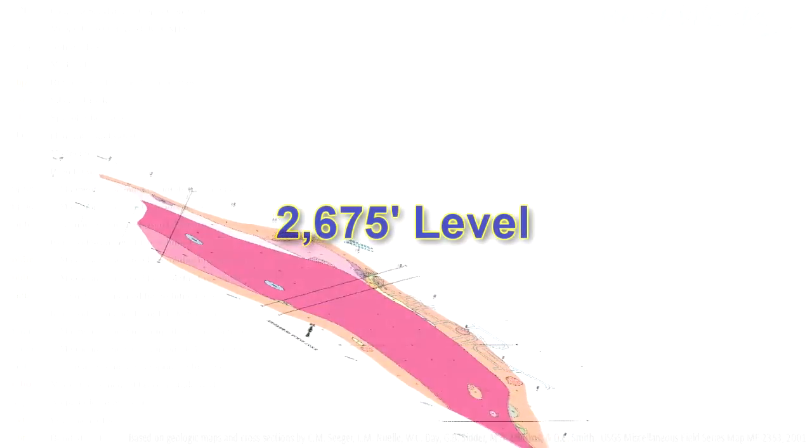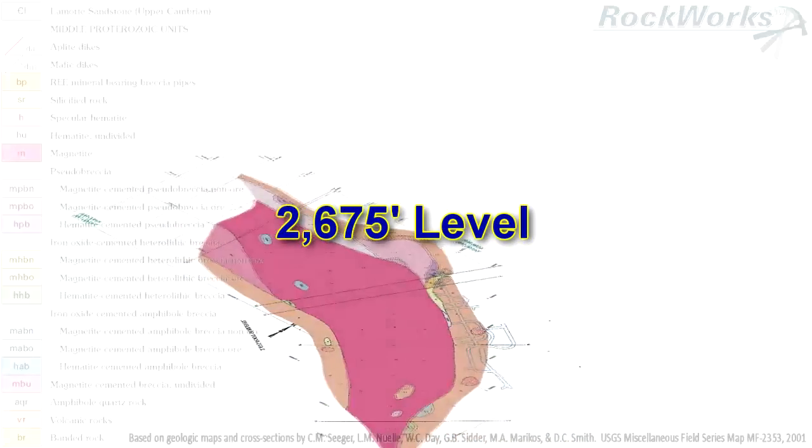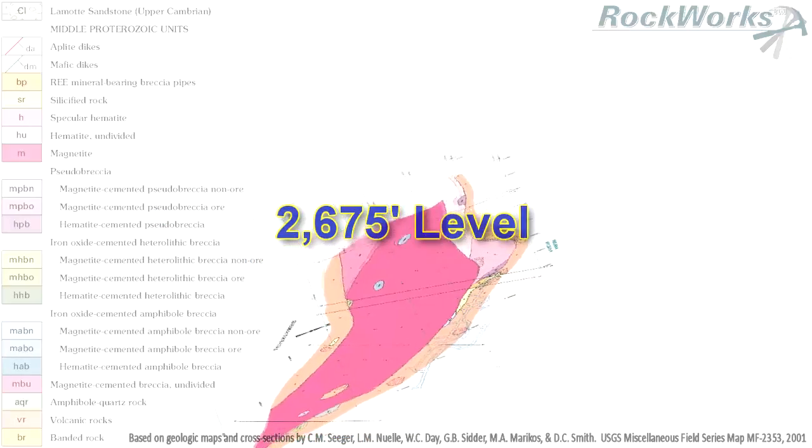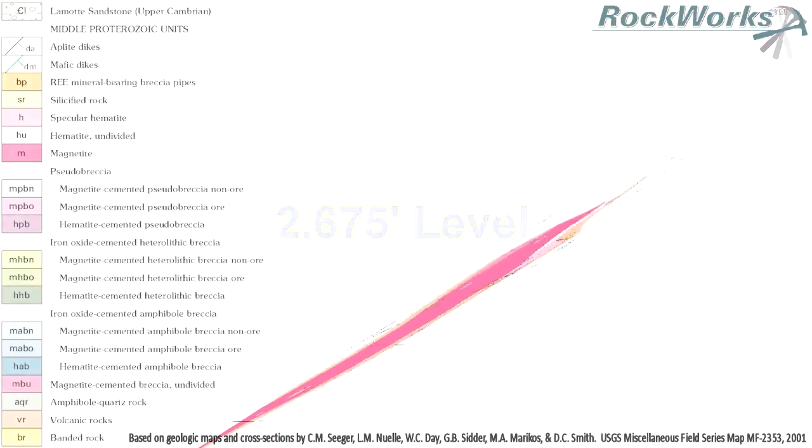Launching three-dimensional visualization of two-dimensional diagrams. The Pea Ridge mine is located near the town of Sullivan in southeastern Missouri. Activating 2,675-foot mine level map.